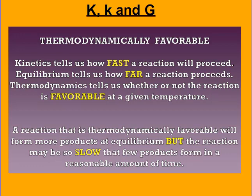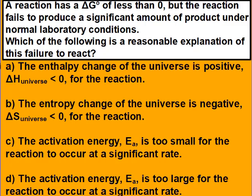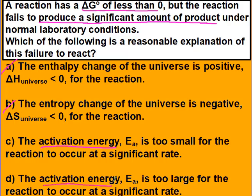If you see a problem that says delta G is negative or you have a large K, but you're not getting any products, the answer usually lies in kinetics. Our delta G is negative, so we should be seeing products — but the reaction fails to produce a significant amount. The only reason we wouldn't create products with delta G less than zero is kinetics — specifically, the activation energy. If activation energy is too large, the reaction occurs very slowly. So the answer must be D: the reaction is under kinetic control.